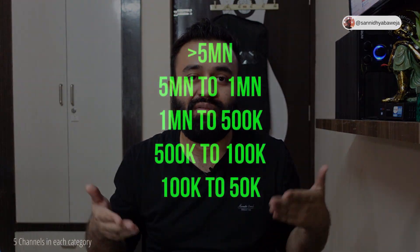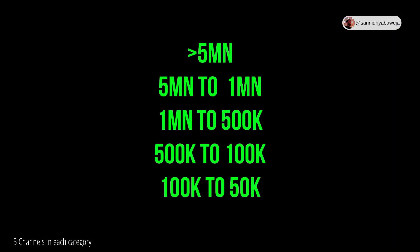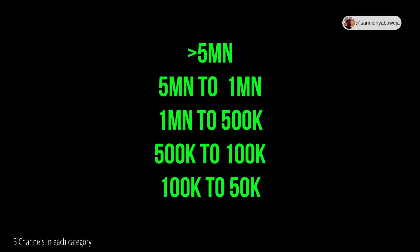You have to make five campaigns based on the data in front of you — a range with minimum and maximum subscriber counts. Break down all the channels you're inspired by. If you have a cooking channel, for example, Nisha Madhulika, Sanjeev Kapoor, Ranveer Brar, and others. List them according to the five subscriber range categories, picking five channels per category.